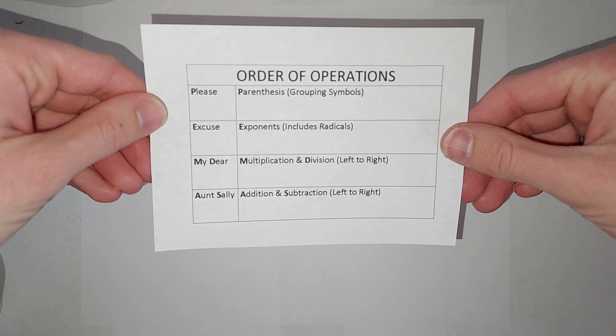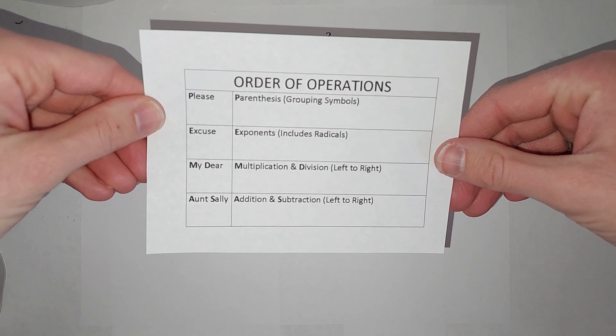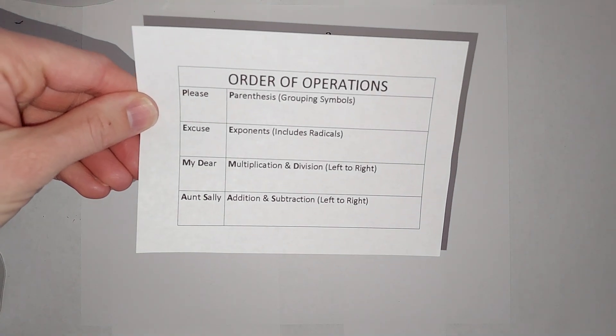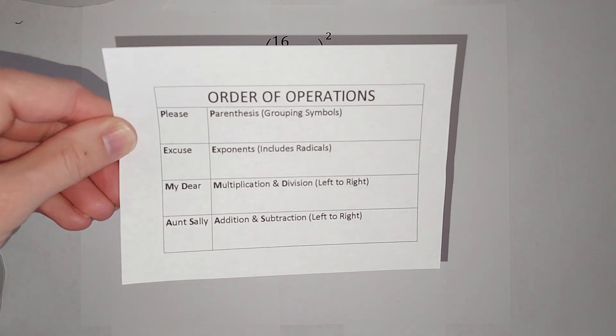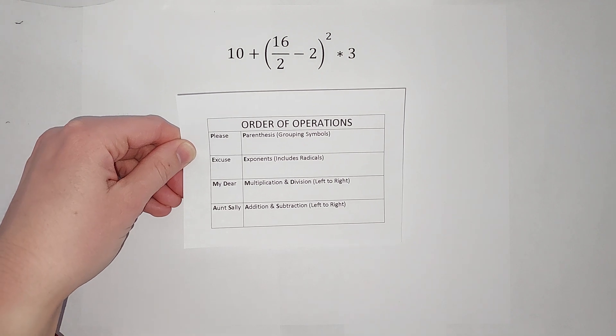There's a bunch of different ways to remember it. I personally use Please Excuse My Dear Aunt Sally, but if you have a different way to remember it, that's great. The P in Please stands for parentheses, and this also includes grouping symbols like brackets. E is for exponents, which includes radicals like square roots.